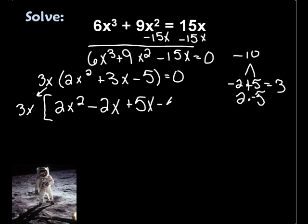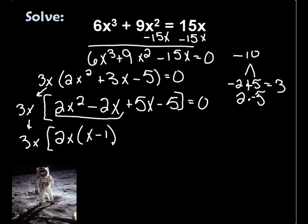Bring him down again. To continue my grouping method, I look at my first two and say, well, what's in common with the first two? And it's 2x, and I end up with (x - 1). I look at my second two and say, well, what's in common with those two? And it's just a 5, and I end up with (x - 1).